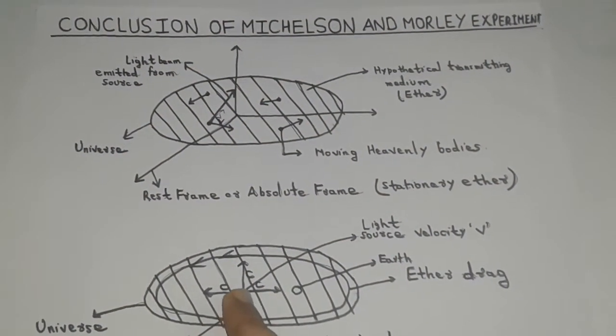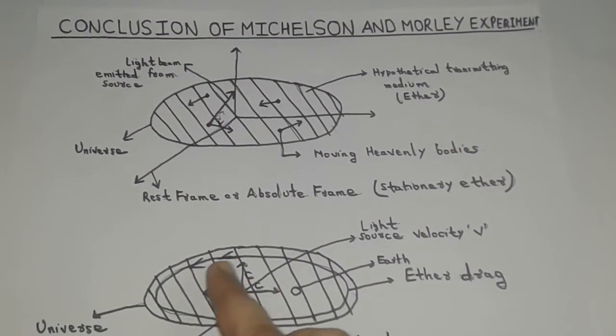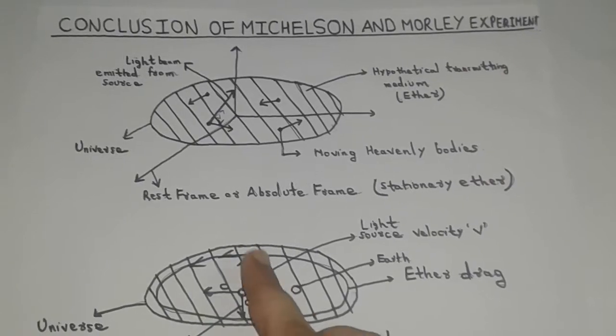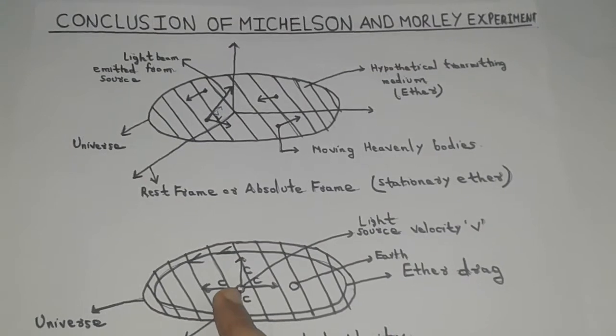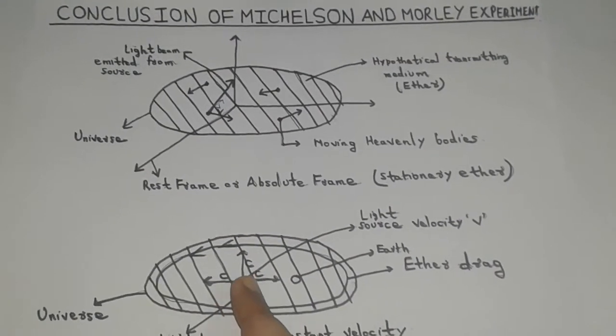The other important conclusion drawn was that the velocity of light is constant in all directions in space, irrespective of the direction of velocity of source.